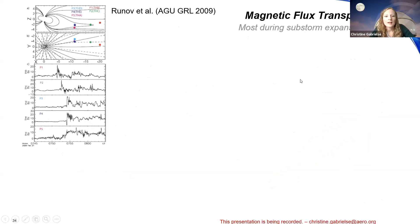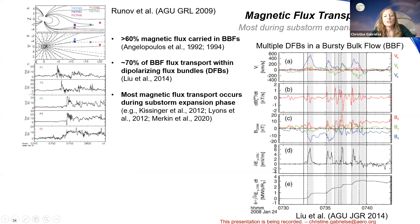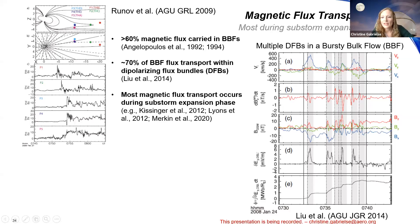Most magnetic flux transport is carried in bursty bulk flows, and within bursty bulk flows, most occurs within dipolarizing flux bundles. A dipolarizing flux bundle propagating earthward crosses multiple THEMIS satellites — you can see a sharp increase in Vz, localized in Y and X as it travels earthward until reaching the more dipolar region. Within each fast flow of a bursty bulk flow, there's enhanced electric field Ey and overall flux transport, as shown by Lew et al.